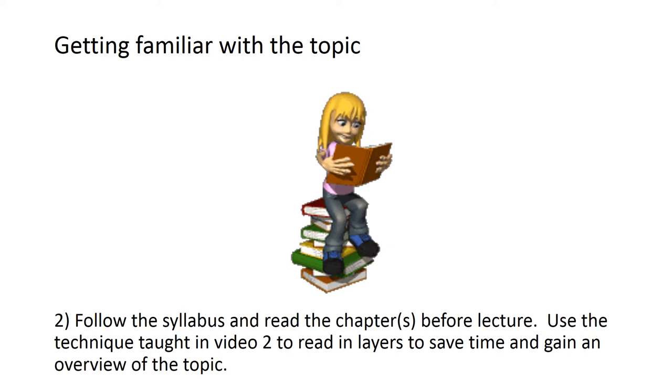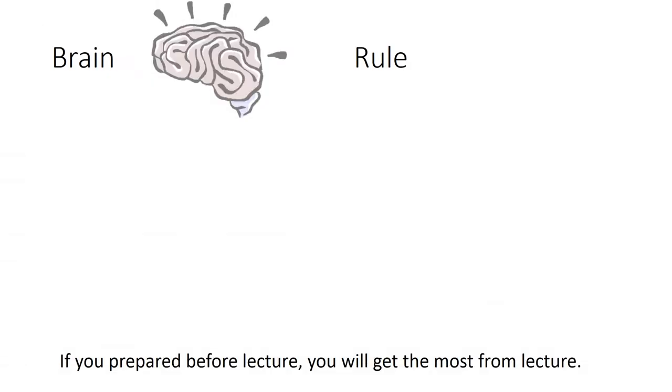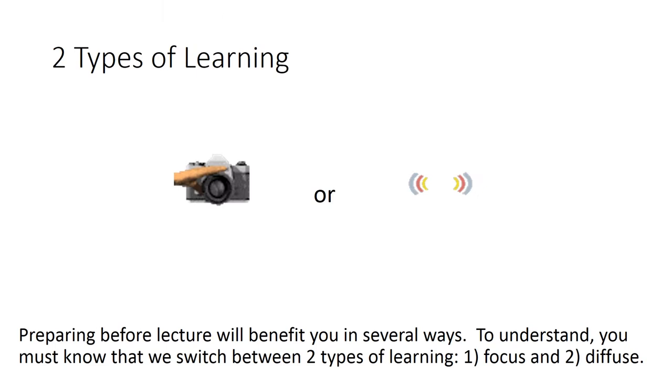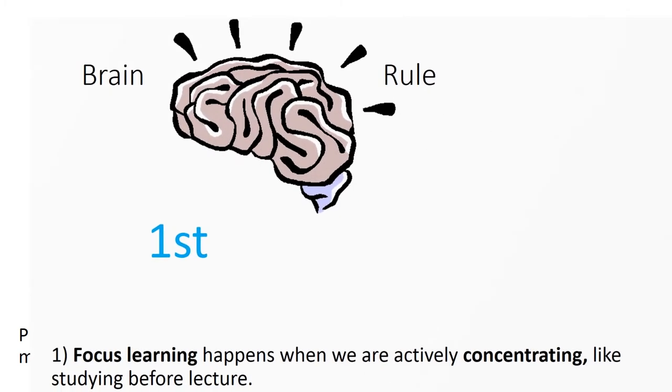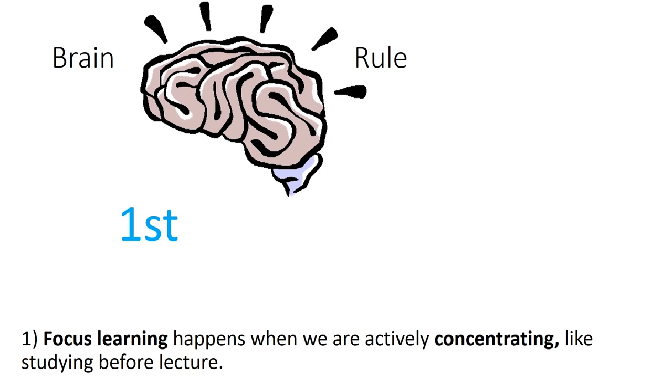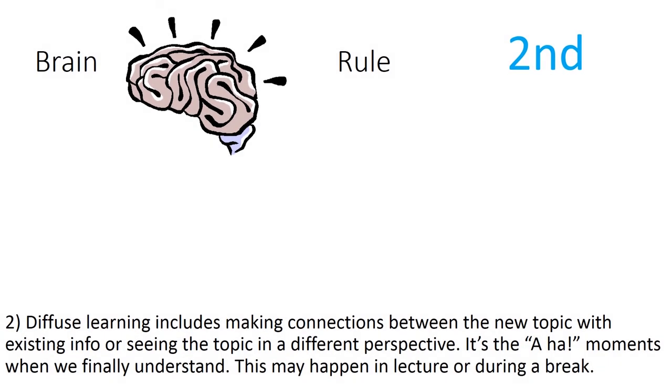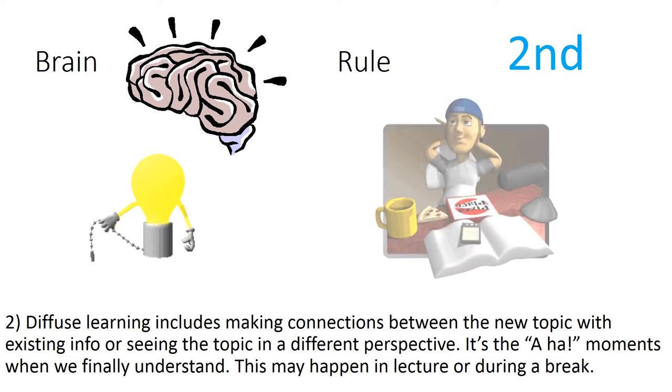Brain rule: If you prepare before lecture, you will get the most from lecture. Two types of learning: Preparing before lecture will benefit you in several ways. To understand, you must know that we switch between two types of learning: focus and diffuse. Brain rule: Focus learning happens when we are actively concentrating, like studying before lecture. Brain rule: Diffuse learning includes making connections between the new topic with existing info or seeing the topic in a different perspective. It is the aha moment when we finally understand. This may happen in lecture or during a break.